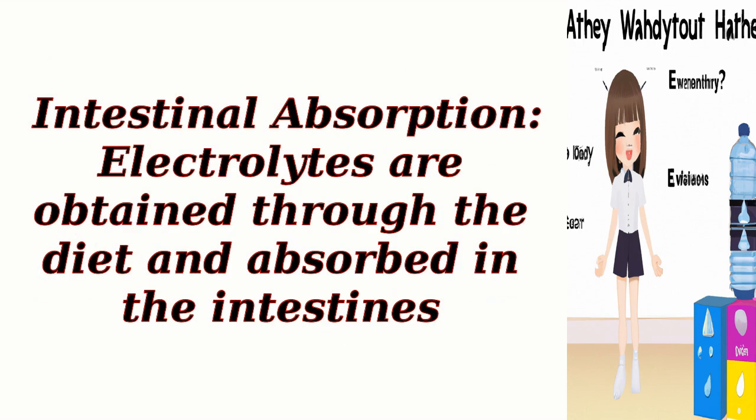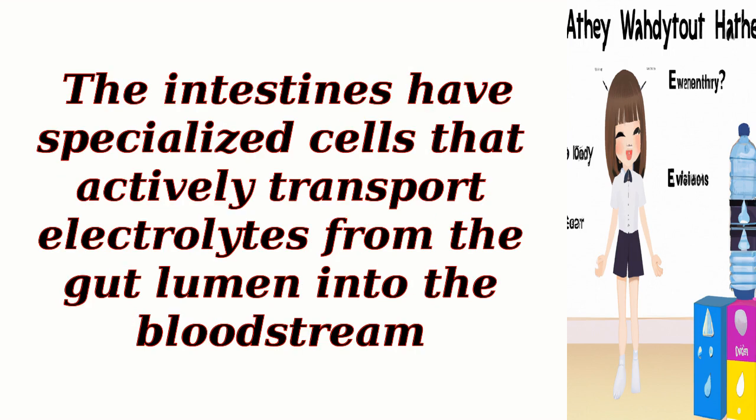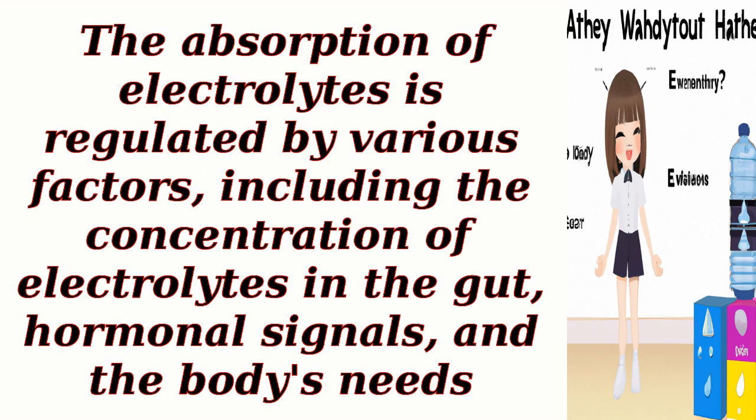Intestinal absorption: electrolytes are obtained through the diet and absorbed in the intestines. The intestines have specialized cells that actively transport electrolytes from the gut lumen into the bloodstream. The absorption of electrolytes is regulated by various factors, including the concentration of electrolytes in the gut, hormonal signals, and the body's needs.